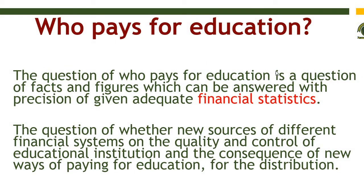The next question is: who pays for education? Whatever we plan for our educational system, how we distribute resources among different alternatives under education — this is the question of who pays for education and who is responsible for making education accessible. Financial statistics tell us who spends money on education. Generally speaking, at the policy-making level, then the provincial level, then institutions, and then within institutions the authorities and subordinates — there is a hierarchy of financial distribution in the educational system.